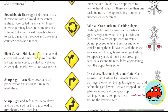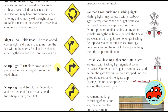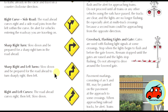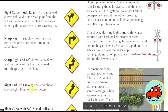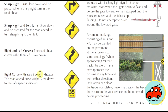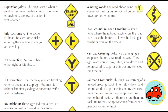A right curve with a side road sign means the road ahead curves right with a side road joining from the left within the curve — be alert for vehicles entering the roadway. A sharp right turn sign means slow down and be prepared for a sharp right turn ahead. A sharp right then left sign means the road turns sharply right and then left. A right and left curves sign means the road curves right and then left — slow down. A right curve with a safe speed indicator means the road curves right, so slow down to the safe speed indicated. A winding road sign means the road ahead has a series of turns and curves — slow down.